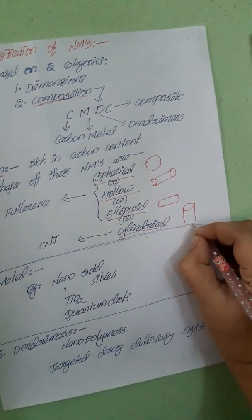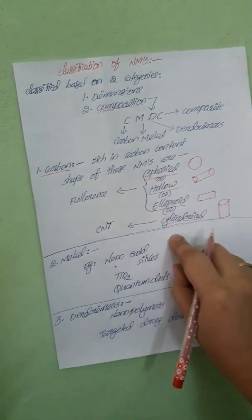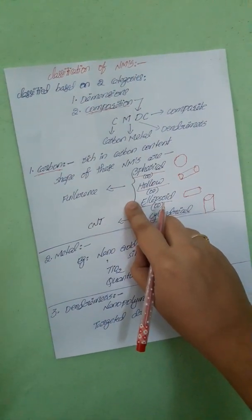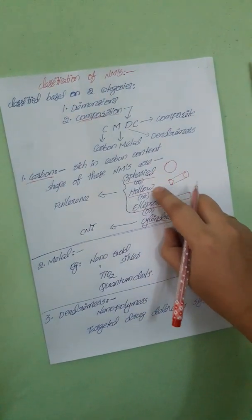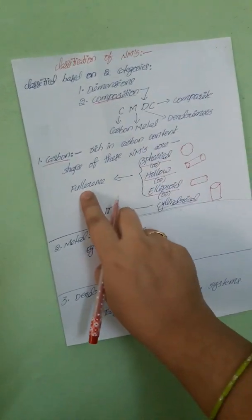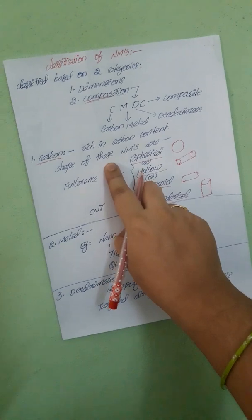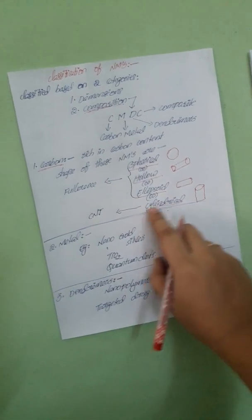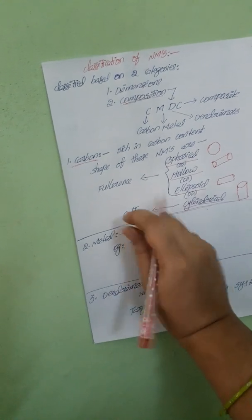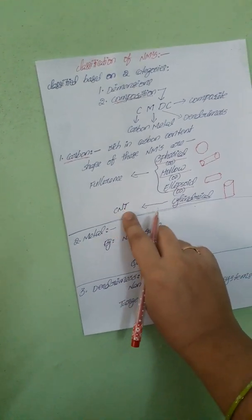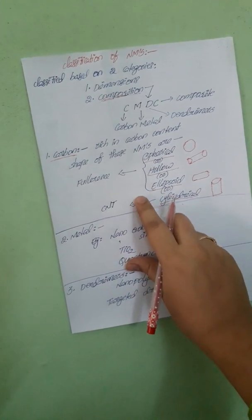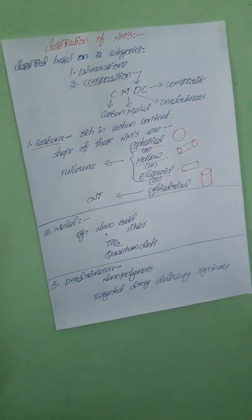These are four different shapes of carbon-based nanomaterials. If carbon-based nanomaterials are in spherical, hollow, or ellipsoid shape, these materials are called fullerenes. If the carbon-based nanomaterials are in cylindrical shape, these are called CNT — carbon nanotubes. These carbon-based nanomaterials are very lighter and stronger when compared to steel.